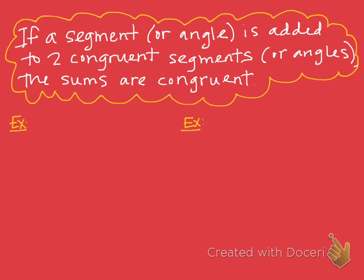In this section we're basically going to be combining some theorems together to save some time and room. Because they kind of mean the same thing — one is dealing with segments, one is dealing with angles — we're going to put them together. So this theorem says: if a segment or angle is added to two congruent segments or angles, the sums are congruent. This theorem can be applied to segments or angles, and we will do an example for each right below.